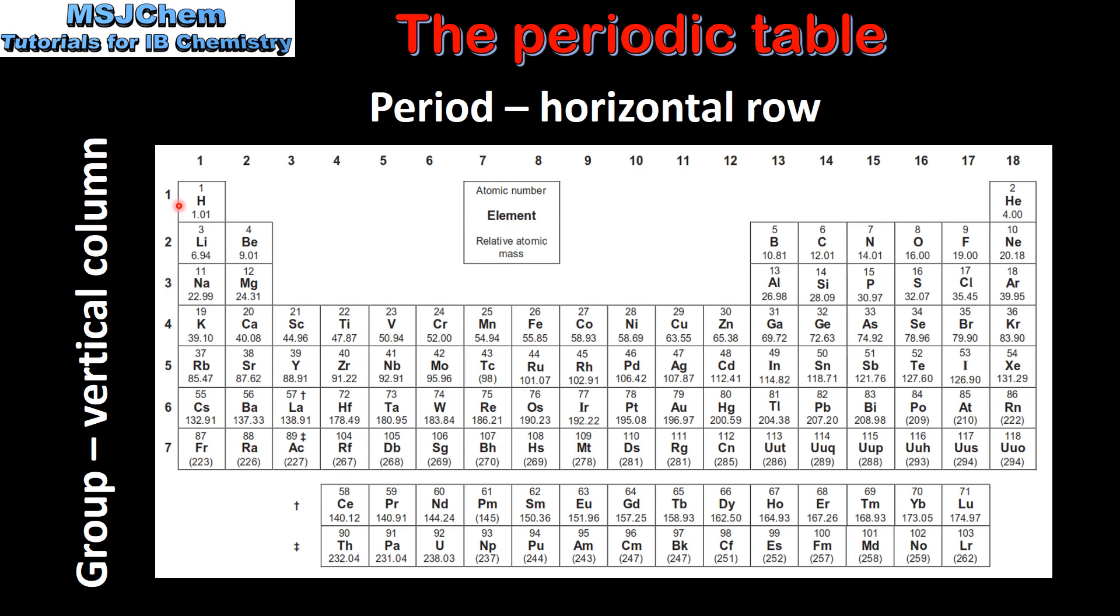The period number tells us the outer energy level that is occupied by electrons. For example, in period 2 all the elements have their valence electrons in the second main energy level and in period 3 all the elements have their valence electrons in the third main energy level.